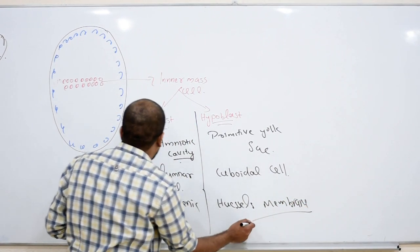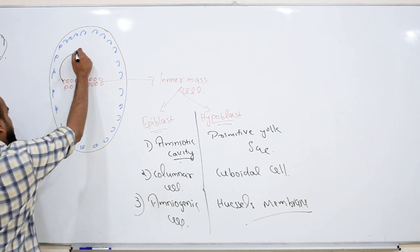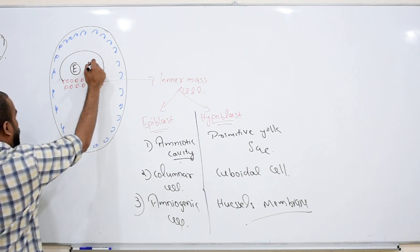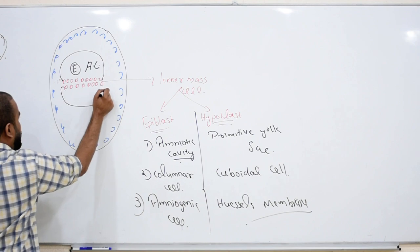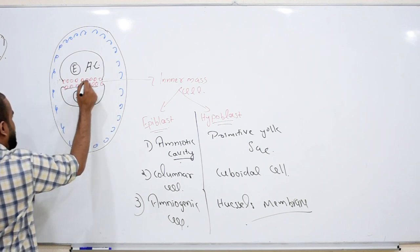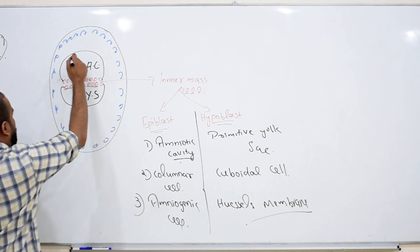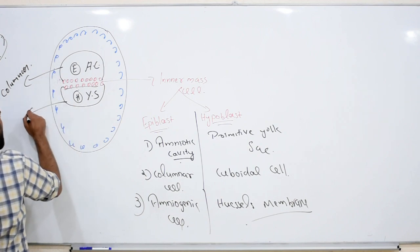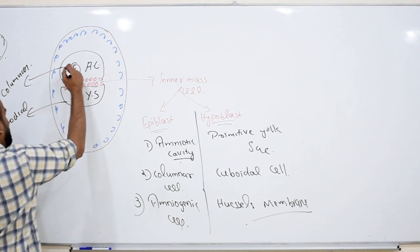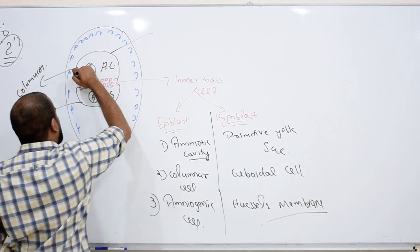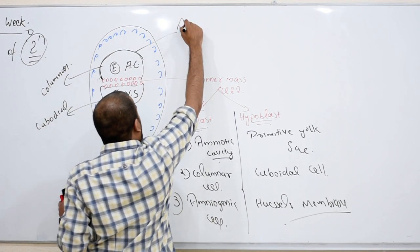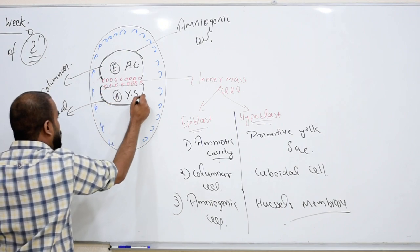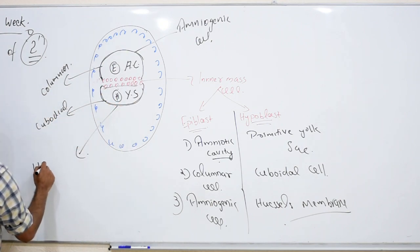Looking at the figure: the inner cell mass forms the epiblast above, with the amniotic cavity above it, and the hypoblast below, with the primitive yolk sac beneath. The epiblast has columnar epithelium and the hypoblast has cuboidal cells. The cells lining the amniotic cavity are called amniogenic cells, and the membrane covering the yolk sac is Heuser's membrane.